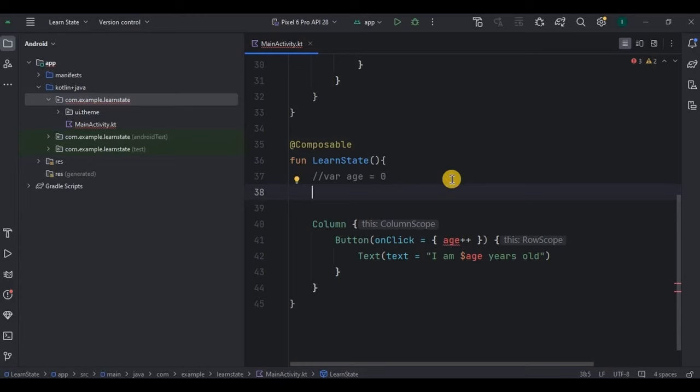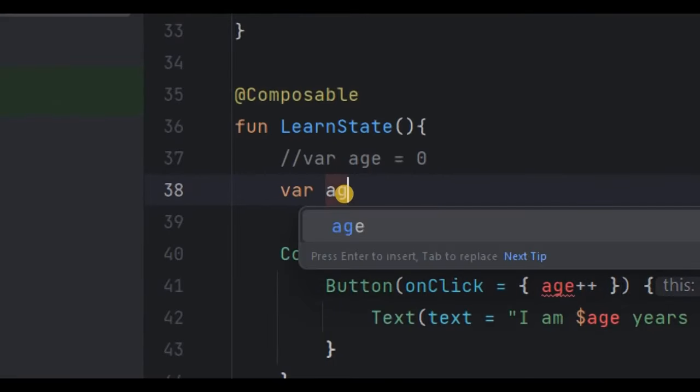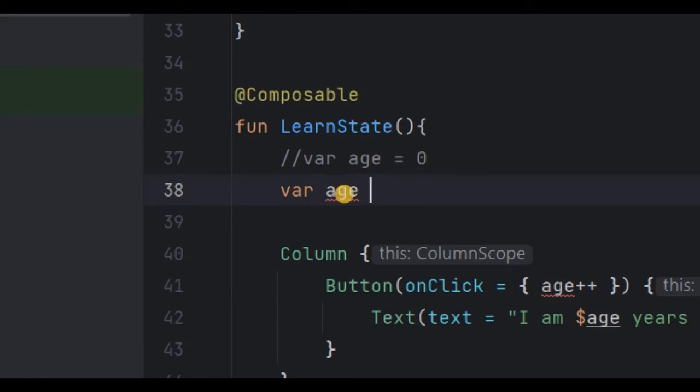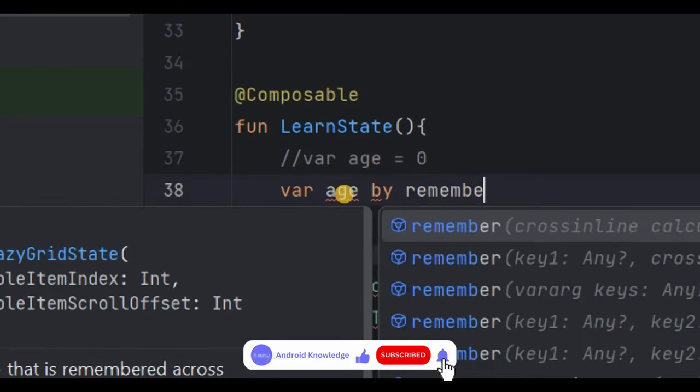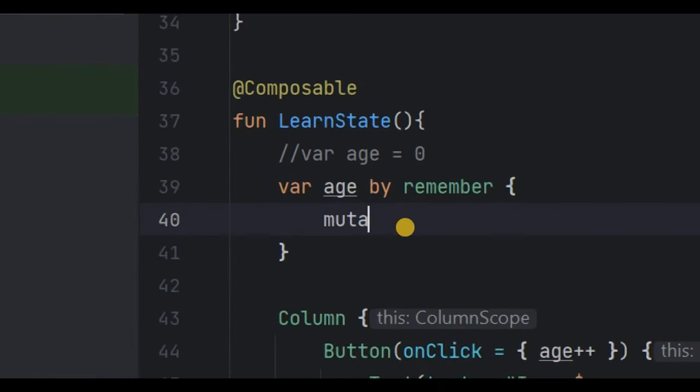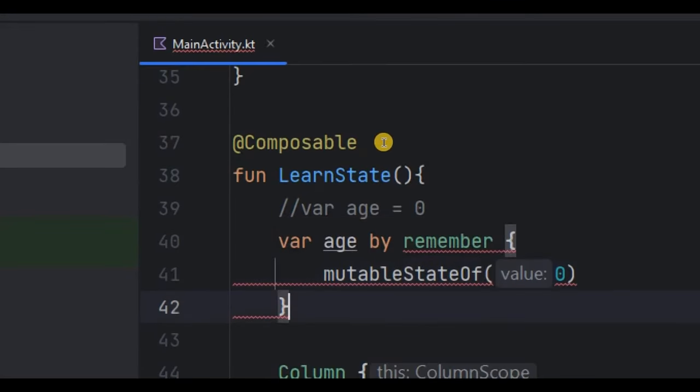Now I'll remove this log and comment this normal variable. Instead we will use state variable. So remember the syntax: var variable name, that is age, by remember, and inside it mutableStateOf, that is the initial value which is zero.